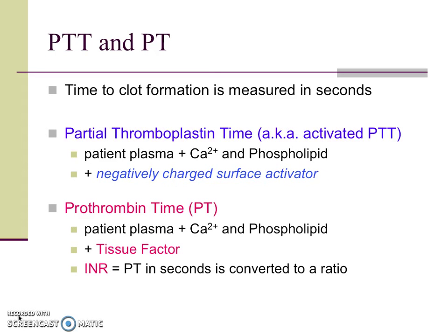To measure the PTT and PT, we draw the patient's blood into a tube containing sodium citrate, also known as the blue top tube. The time to clot formation is measured in seconds. In the PTT test, we add back calcium, phospholipid, and a negatively charged surface activator such as kaolin, which directly activates factor 12 in the patient's plasma in the test cuvette. This forces coagulation to proceed down the intrinsic pathway preferentially in the testing environment. The time to convert liquid plasma into solid plasma is measured in seconds, and the result is reported as the PTT.